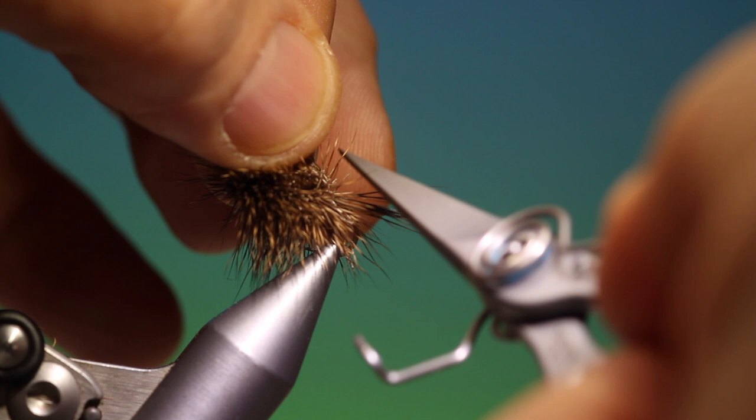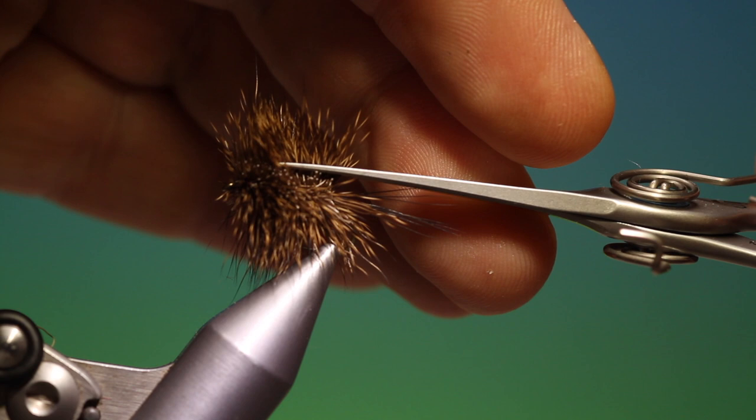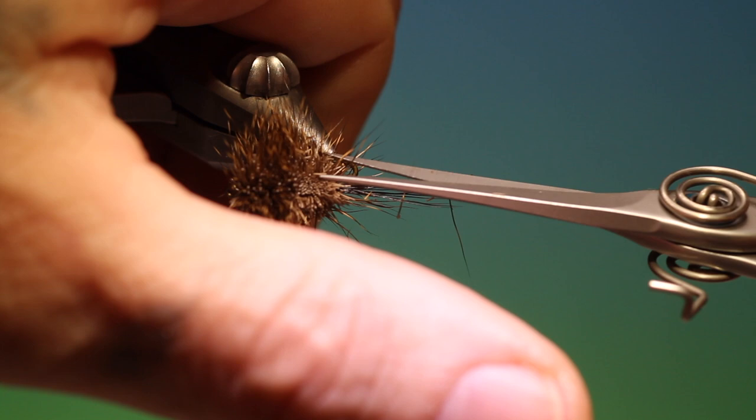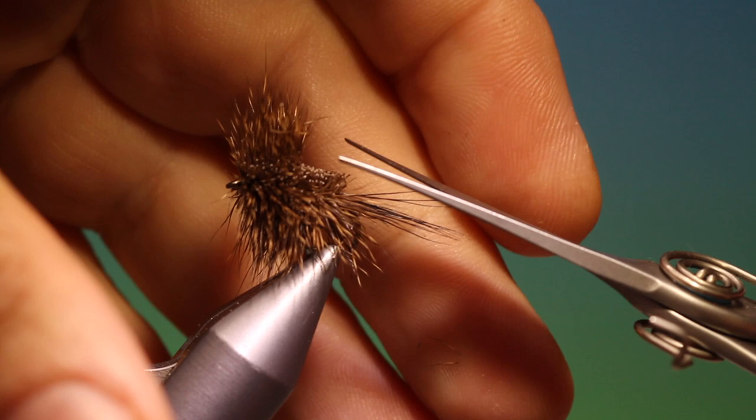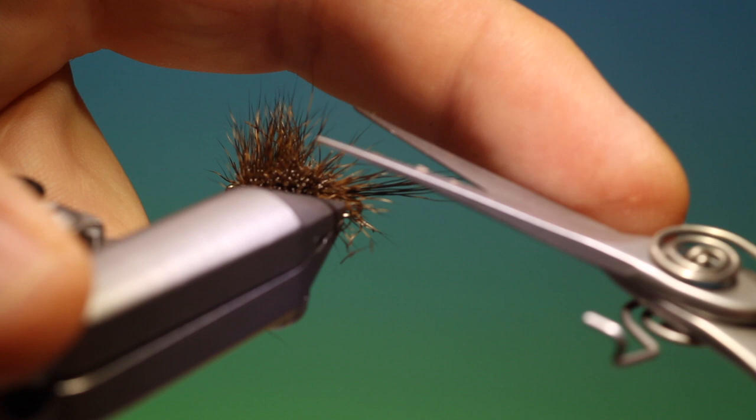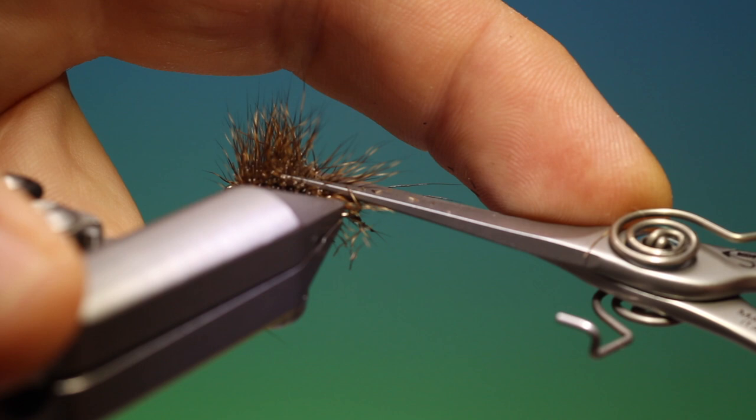You want to leave the hackle at the front, of course. So we just go around like this. Push the tail out of the way with your scissors. And continue until you've trimmed the whole body down.